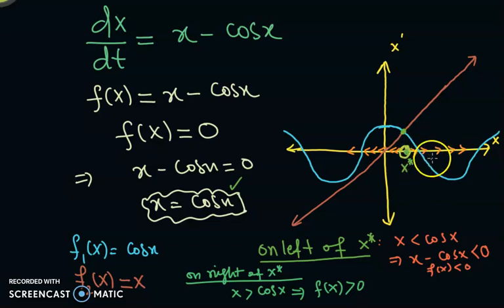It should not be filled, it should be empty from inside. It should be open dot. So this is what we are observing, that the x star is source and hence unstable.